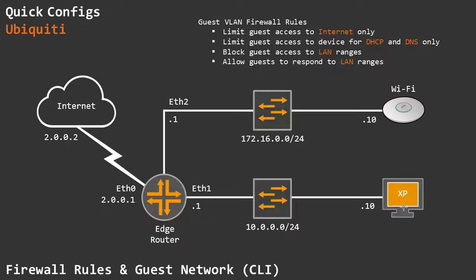However, we do want them to respond to requests from our LAN ranges. So if I have a management station on my LAN and I want to manage these access points or reach these hosts for troubleshooting, I do want that traffic to be allowed to them and I want return traffic allowed back. Only if we initiate traffic from the LAN side are we basically allowing traffic to the LAN range from the guest network's perspective.